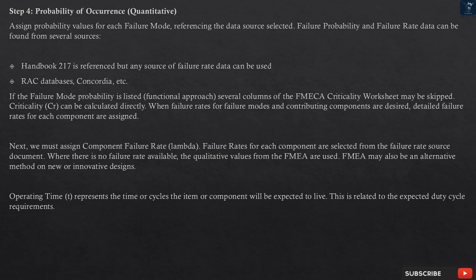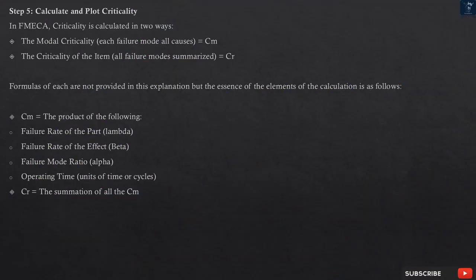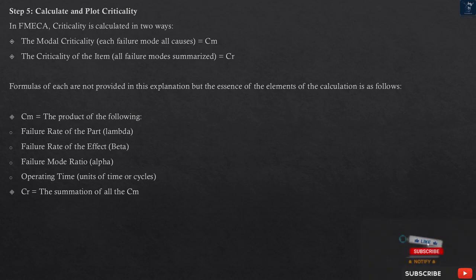Step 5: Calculate and plot criticality. In FMECA, criticality is calculated in two ways. The modal criticality (each failure mode, all causes) equals CM. The criticality of the item (all failure modes summarized) equals CR. CM equals the product of the following: failure rate of the part (lambda), failure rate of the effect (beta), failure mode ratio (alpha), and operating time (units of time or cycles). CR equals the summation of all the CM values.